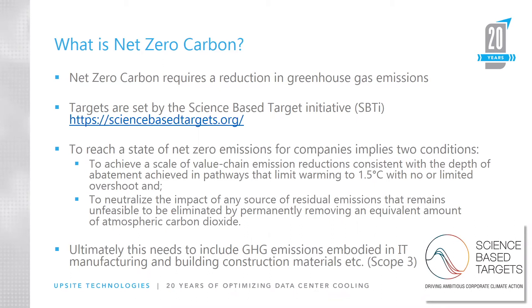To reach a state of net zero emissions, companies need to meet two conditions. First, they must achieve a scale of value chain emission reductions consistent with limiting warming to 1.5 degrees Celsius. Second, they must neutralize the impact of any residual emissions that remain to be eliminated by permanently removing an equivalent amount of atmospheric carbon dioxide.